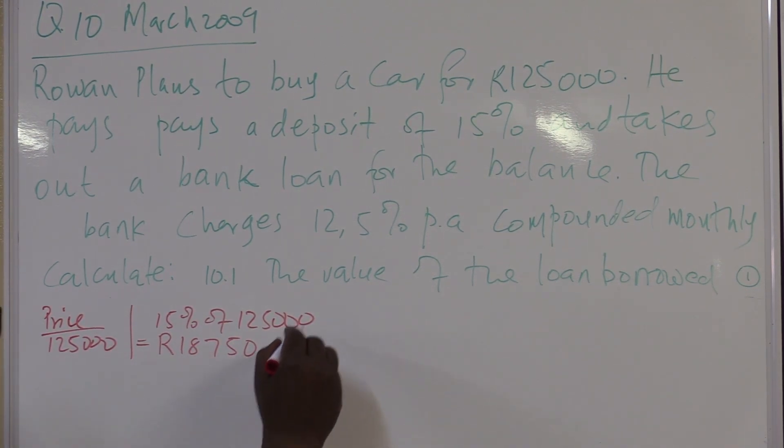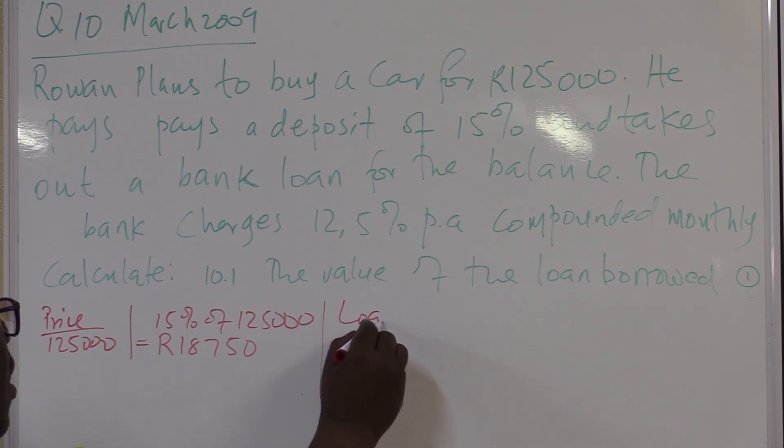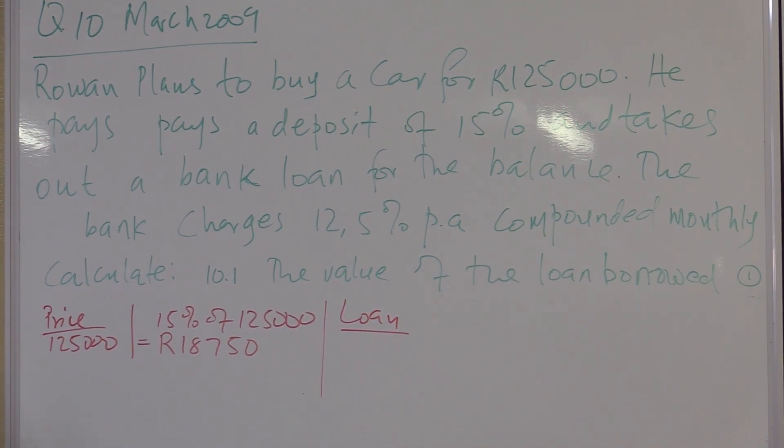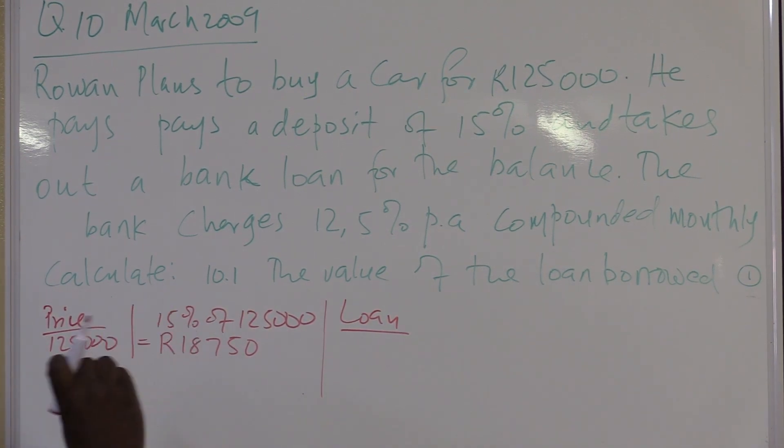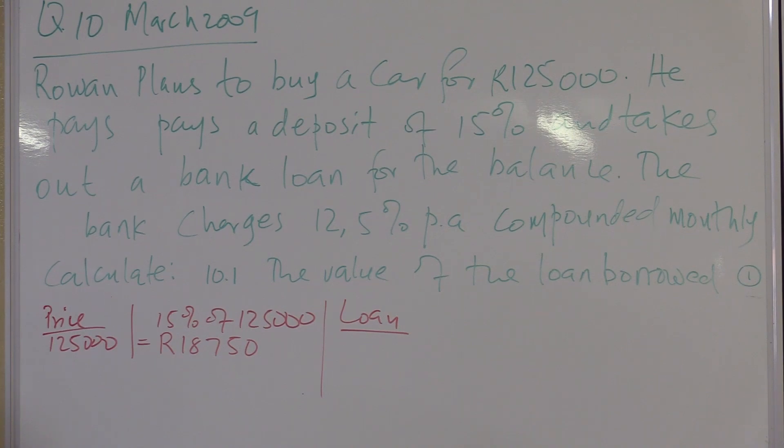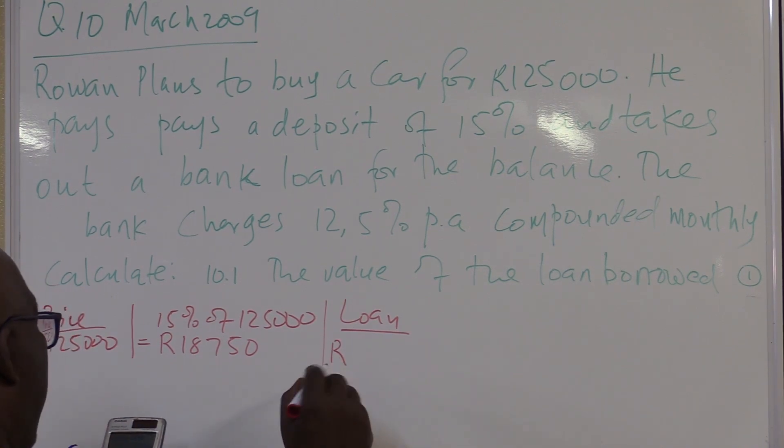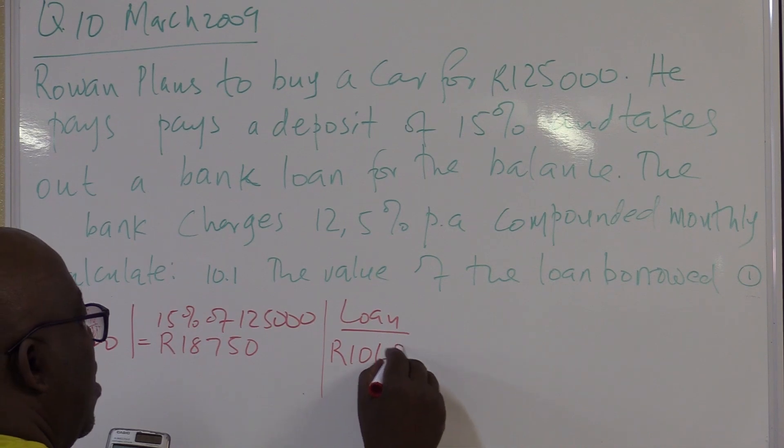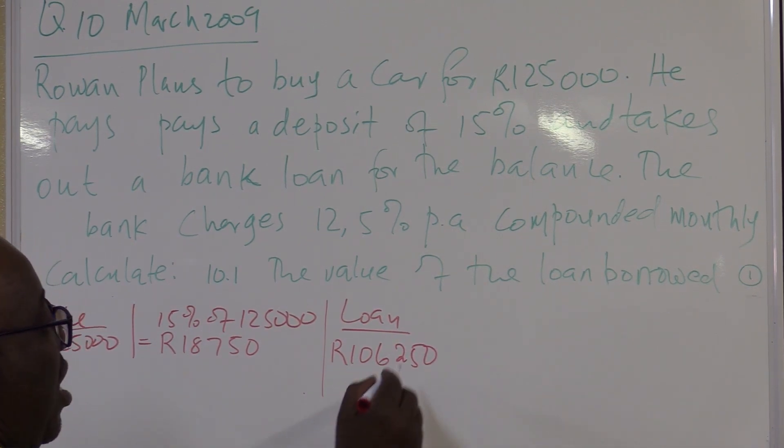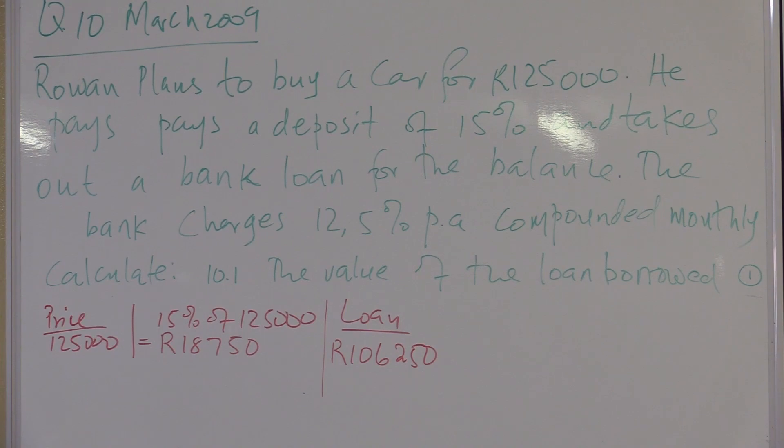Now if, let me just check the loan. This car is worth $125,000, minus the deposit that I pay, which is $18,750. How much is the loan? This is what he needs to borrow from the bank. It is $106,250.